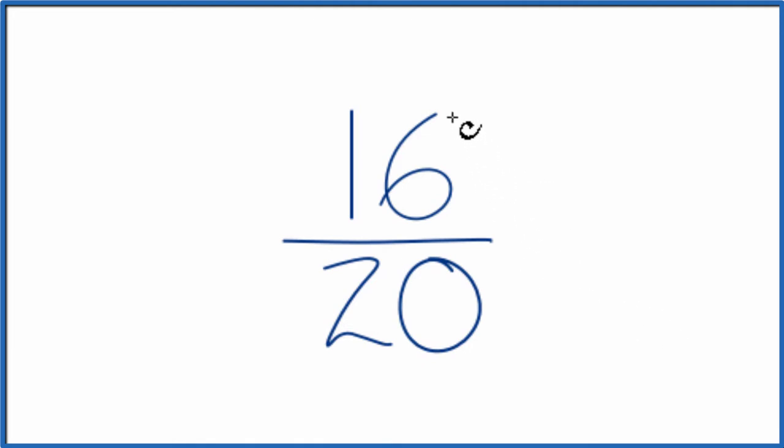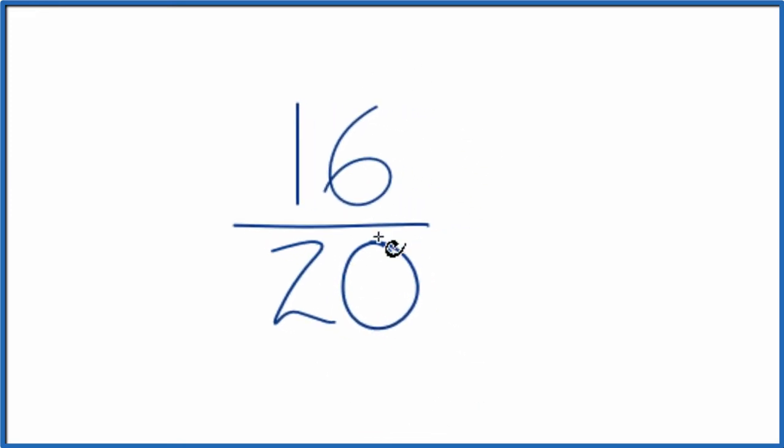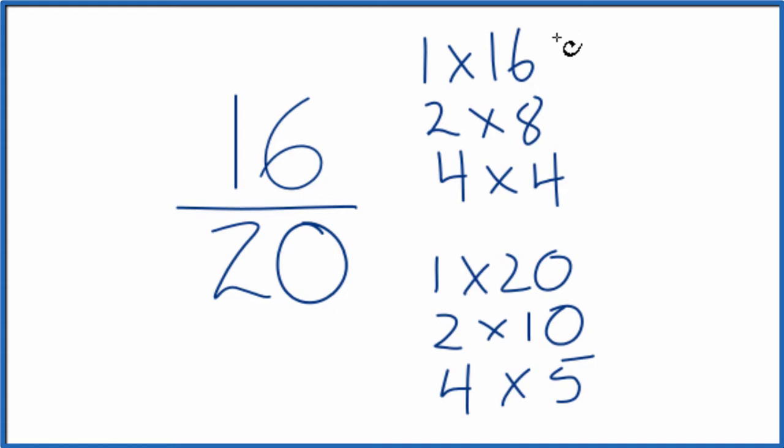Something that goes into 16 and 20. So here are the factors of 16 and 20. We want to find the greatest common factor. It looks like the greatest factor that goes into both 16 and 20 is 4, so we'll divide 16 by 4 and 20 by 4.